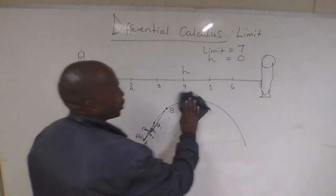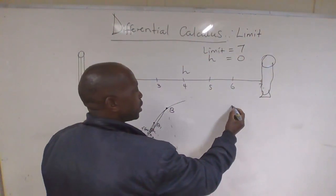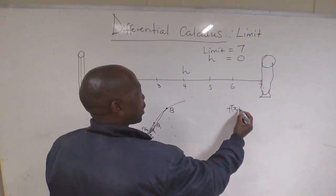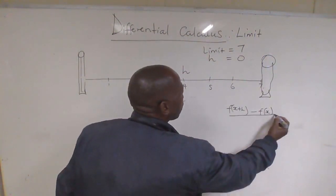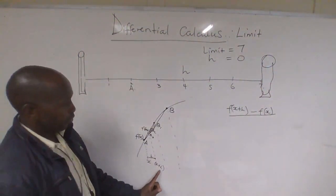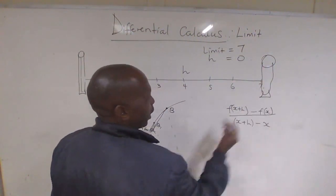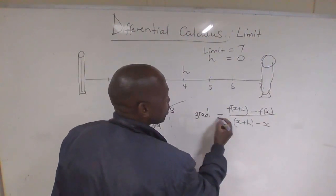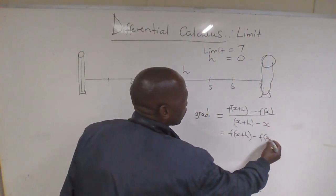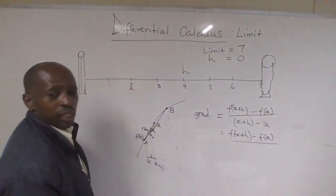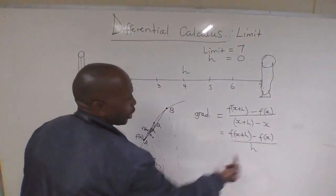And the gradient becomes the change in Y over the change in X. So what does it mean? It means now we are saying, f of X plus H—this is the new value of Y—subtract the first value of Y. And then we are saying everything over the change in X. The value of X is X plus H, and then we are subtracting X. So this is the gradient. But look at it like this. If this is the gradient, we are saying this can be reduced to f of X plus H minus f of X, and then we are dividing this by—let's simplify the denominator there. If we simplify the denominator, it becomes H. You can see, when we remove these brackets, X minus X will give zero. We are remaining with H there.